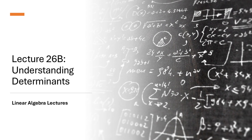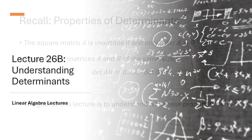This lecture is a supplement to lecture 26 where I talked about determinants, and in that lecture I mentioned some of the remarkable properties that determinants have. In this lecture I'm going to go through some explanations of those properties, but this lecture is optional, and nothing I talk about here is going to be referred to in any of the remaining lectures in this series.